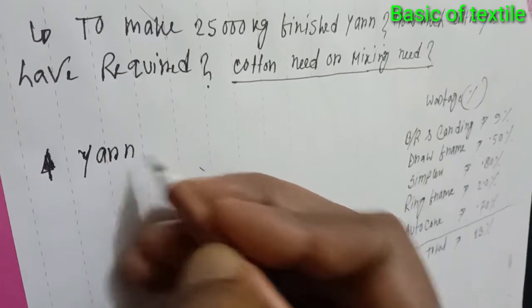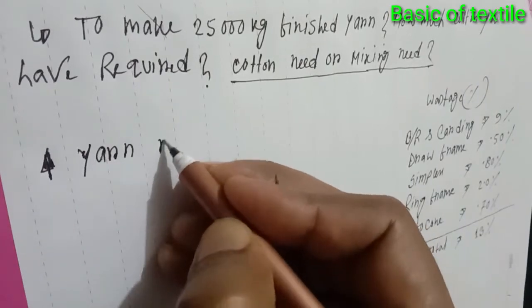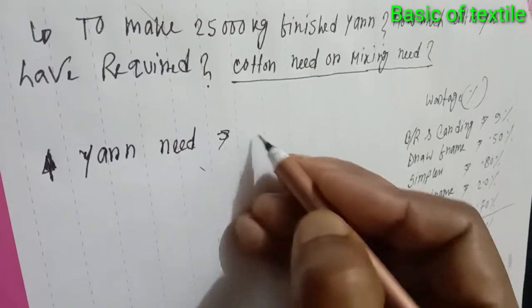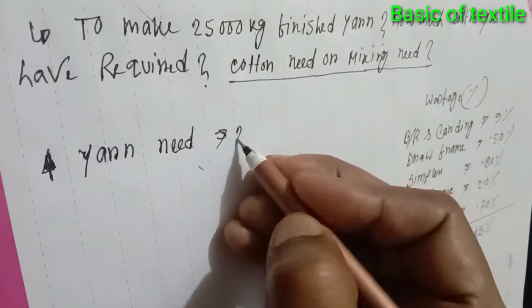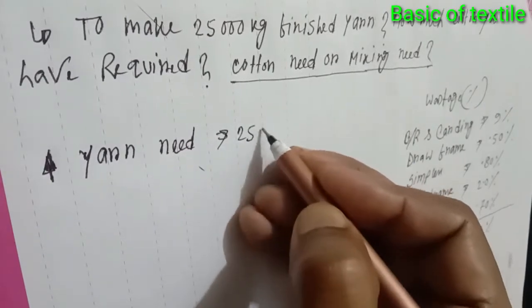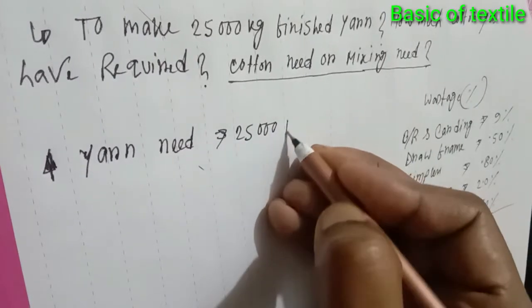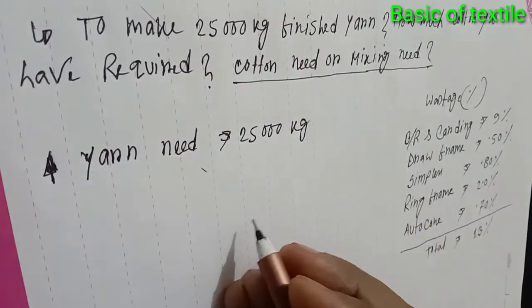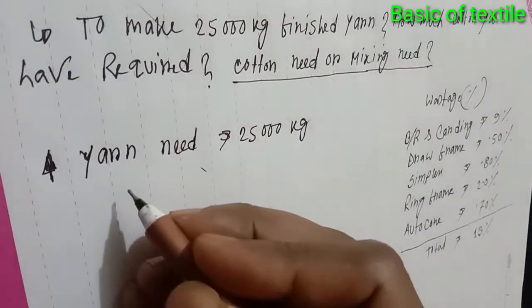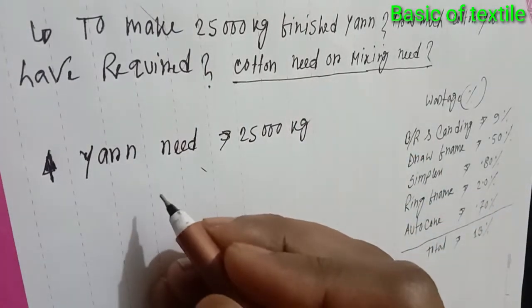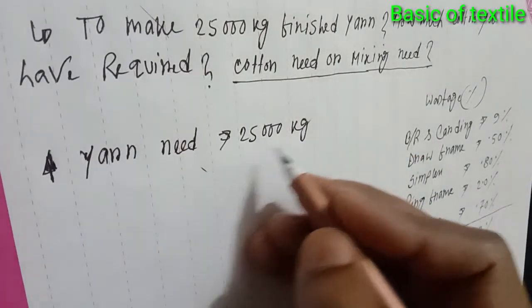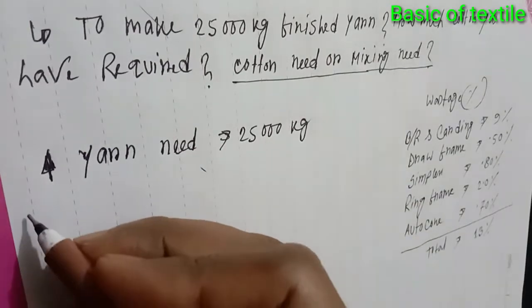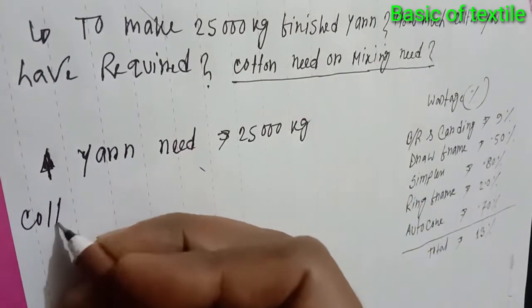Yarn. Neat. Equal 25,000. Cotton or mixing — neat. Cotton — neat.